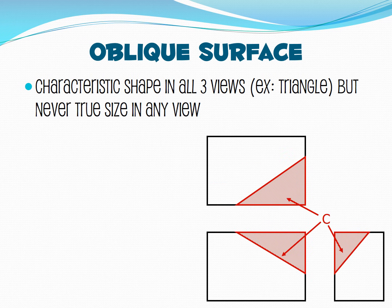Here's an example of an oblique surface. This is one where the characteristic shape is a triangle, but it's never its true size in any of these shapes.